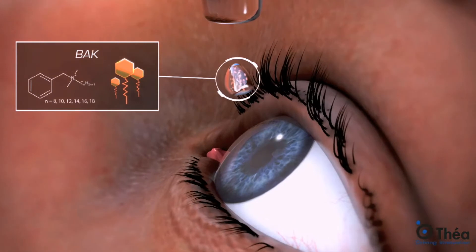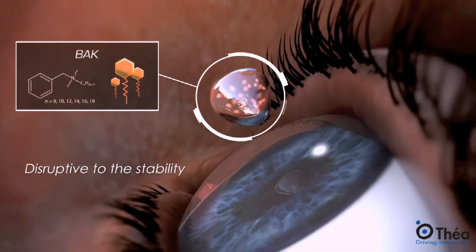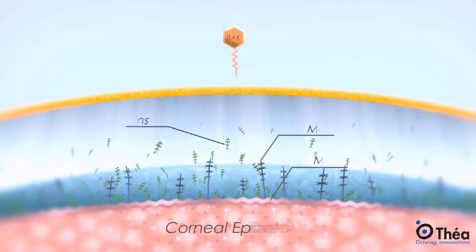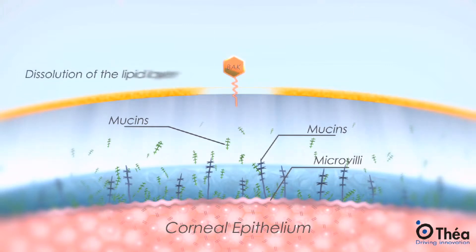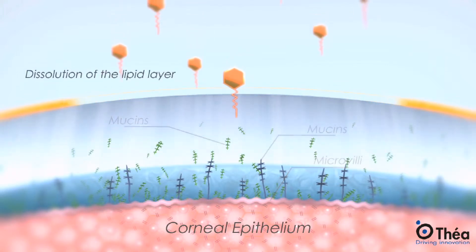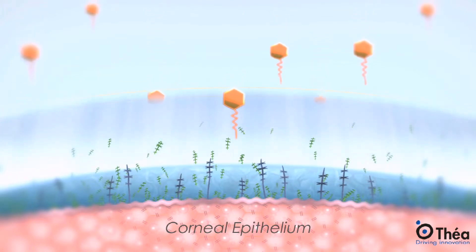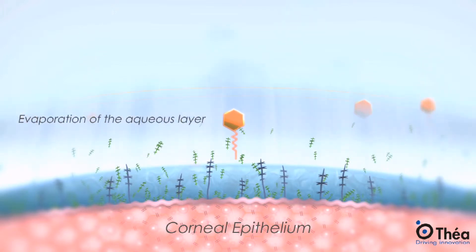But BAC is also the most disruptive to the stability of the ocular surface unit, which comprises the tear film, conjunctiva and cornea. When a drop containing BAC arrives on the ocular surface, it breaks the superficial thin lipid layer of the tear film into numerous oil droplets by detergent action. This dissolution leads to free evaporation of water vapor and hence hastening drying of the ocular surface.